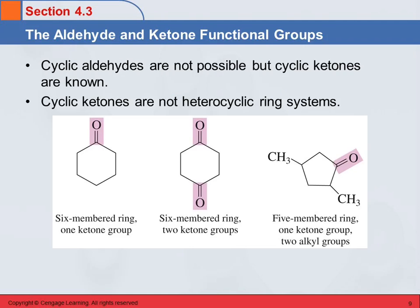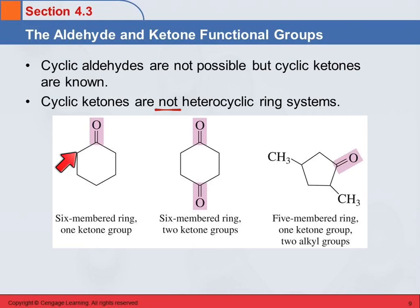We cannot have cyclic aldehydes because that carbon needs a hydrogen. But we do have cyclic ketones. Cyclic ketones are not heterocyclic ring systems — cyclic ethers were, but cyclic ketones are not, because we look at the ring and it's only carbon atoms. The oxygen is double-bonded to one of the carbons, but the ring itself is all the same atom, so it's not heterocyclic — you could say it's homocyclic, but nobody ever says that.